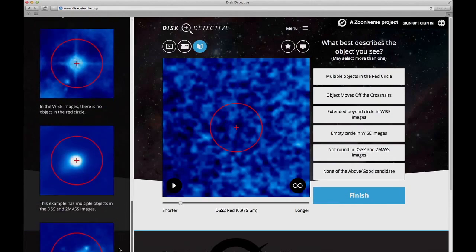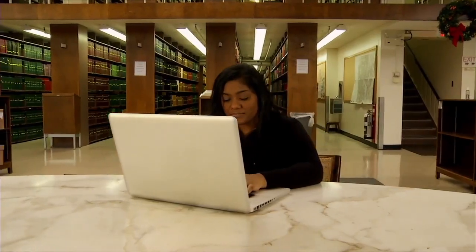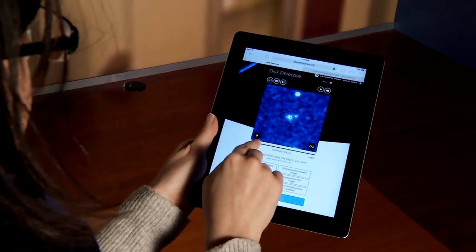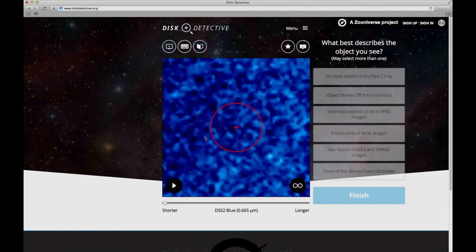Others contain galaxies, asteroids, nebulae, and other objects. When you go to the site and classify objects, you'll be helping me and other NASA scientists figure out which is which.